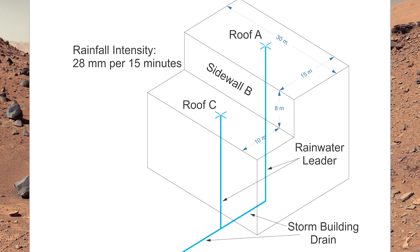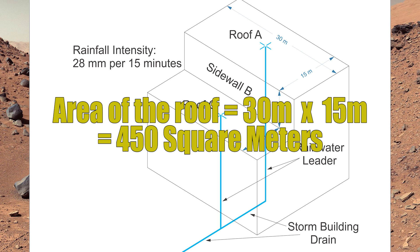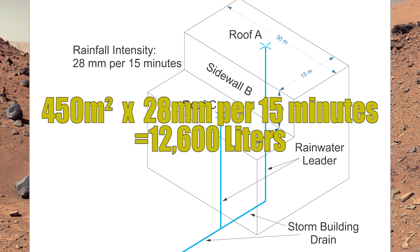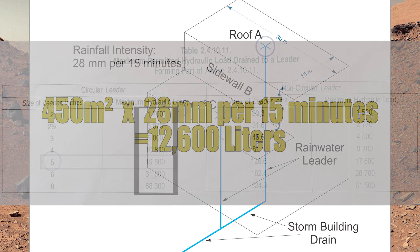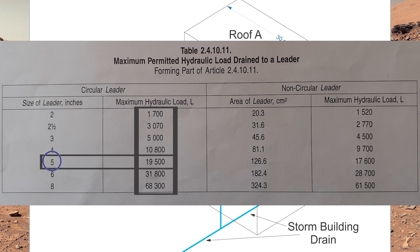Roof A we've already sized. We still have the same rainfall intensity of 28 millimeters per 15 minutes, and the roof is 30 meters by 15. Doing the math — 30 times 15 times 28 — we get 12,600 liters draining down that rainwater leader. That is a five-inch rainwater leader, and as it turns and becomes the storm building drain, we've already figured that out to be six inches.